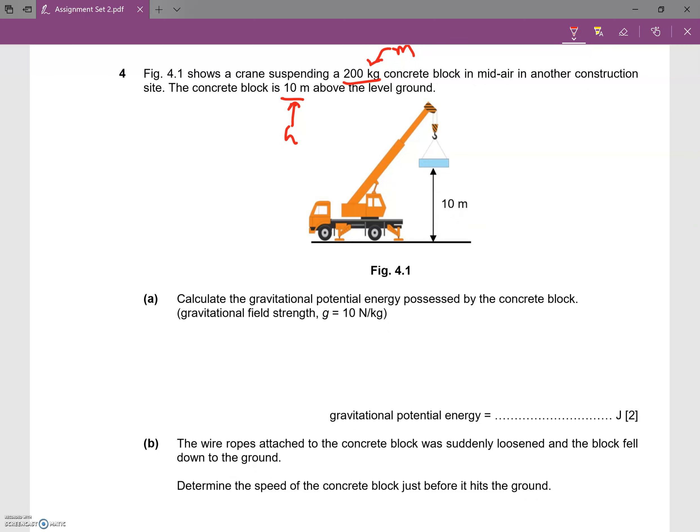Now, calculate the gravitational potential energy possessed by the concrete block. This is just a very simple calculation for GPE. GPE equals MGH.